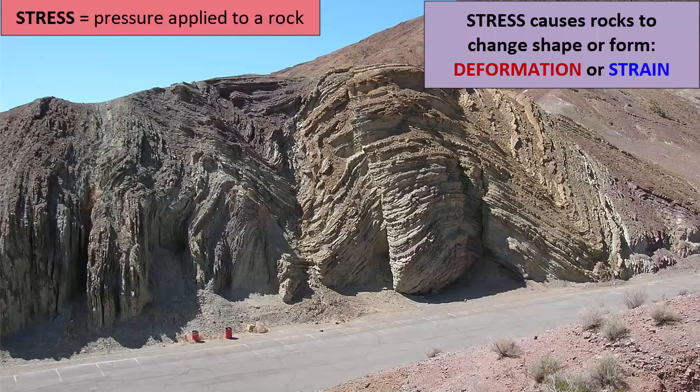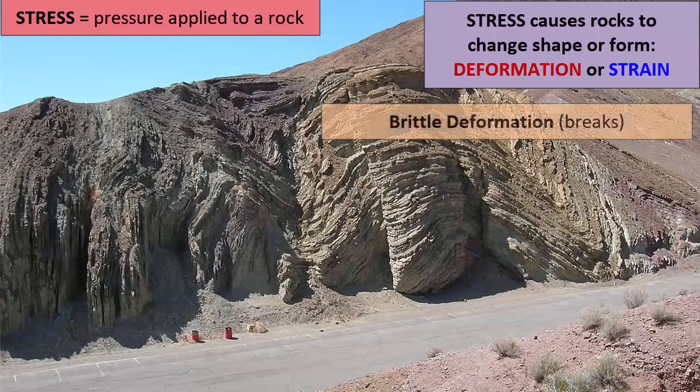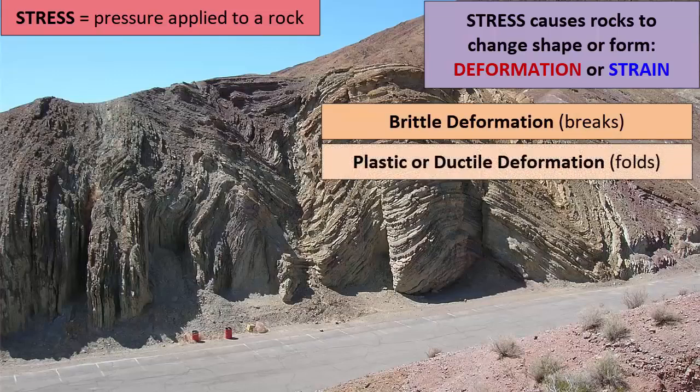Rocks that are undergoing deformation are experiencing strain. In some cases, strain or deformation of a rock leads to breaking the rock, which we call brittle deformation. In some cases, strain or deformation leads to a rock bending or folding, which we call ductile or plastic deformation.